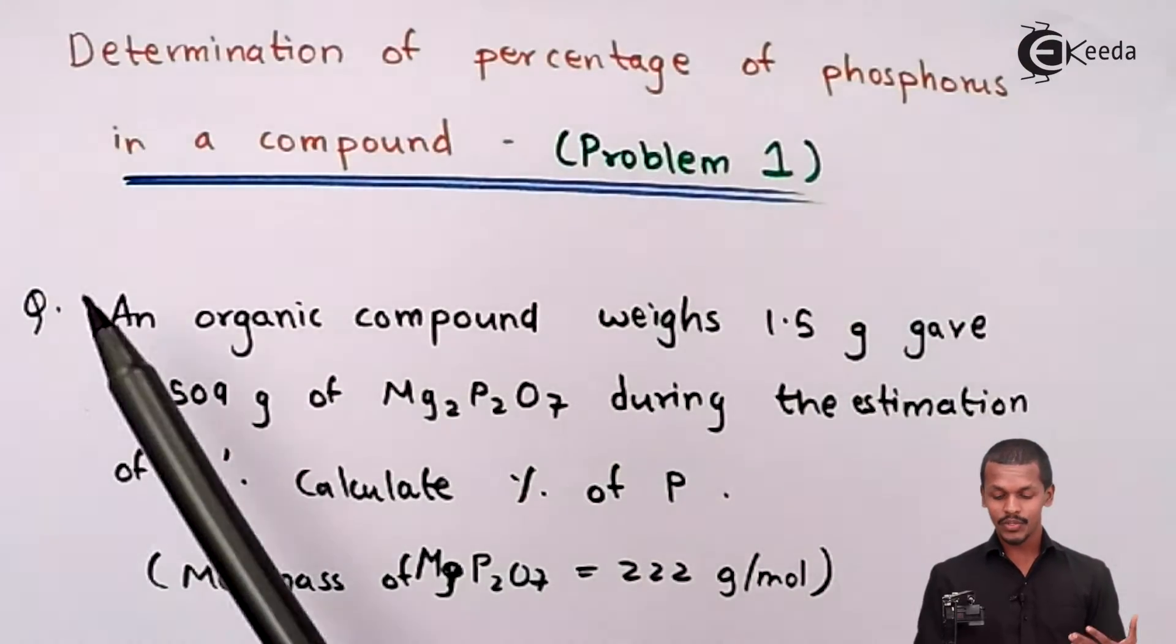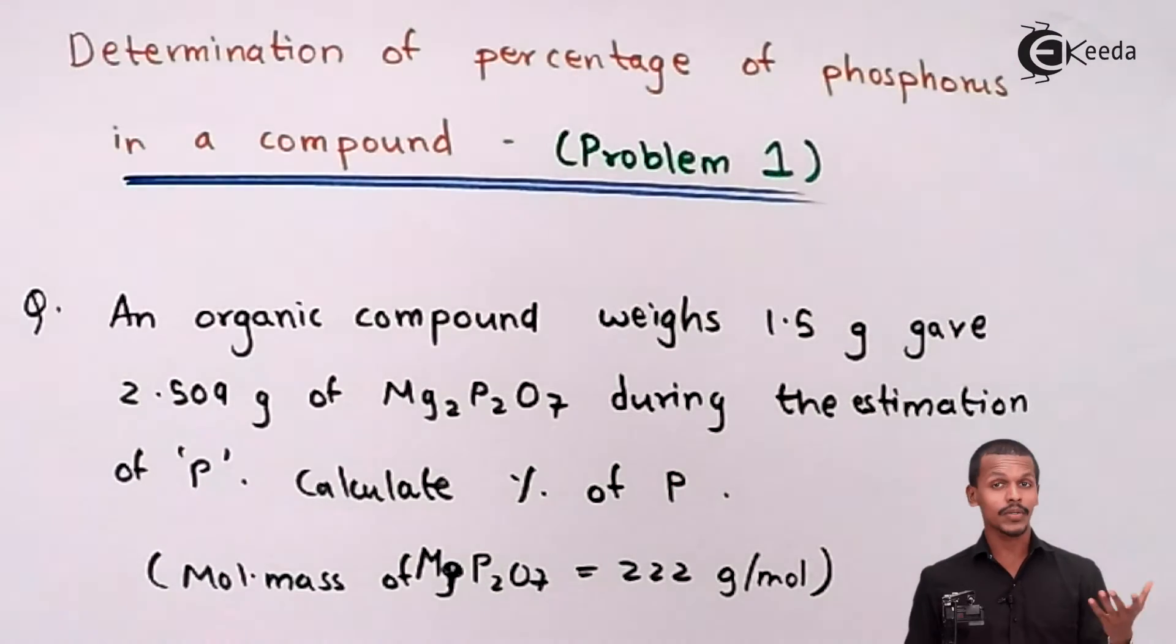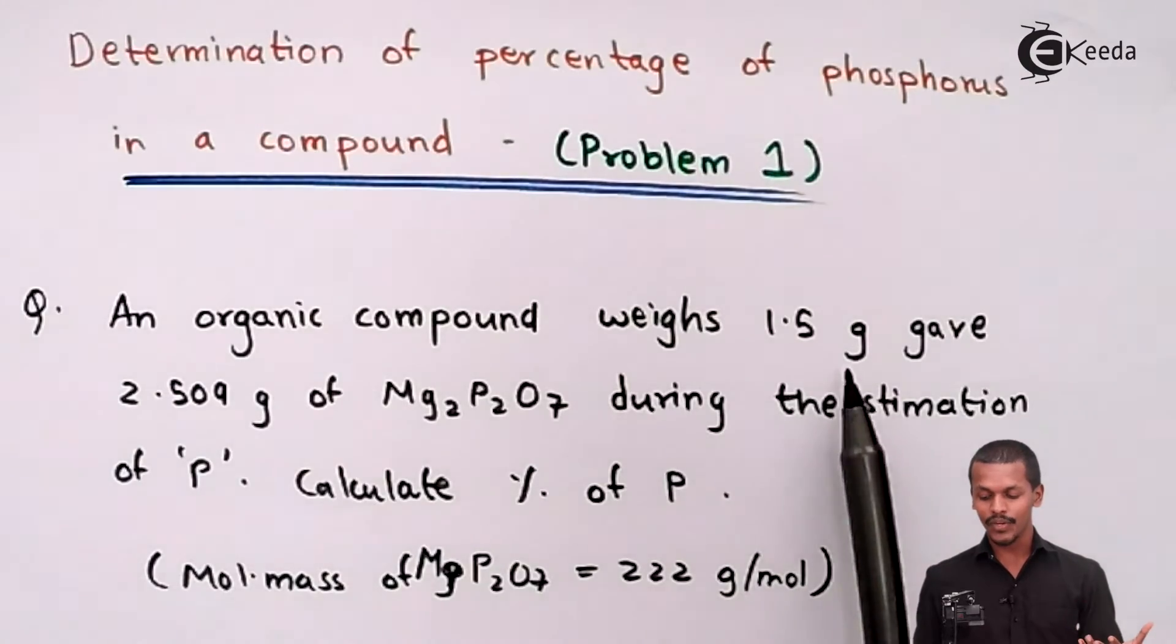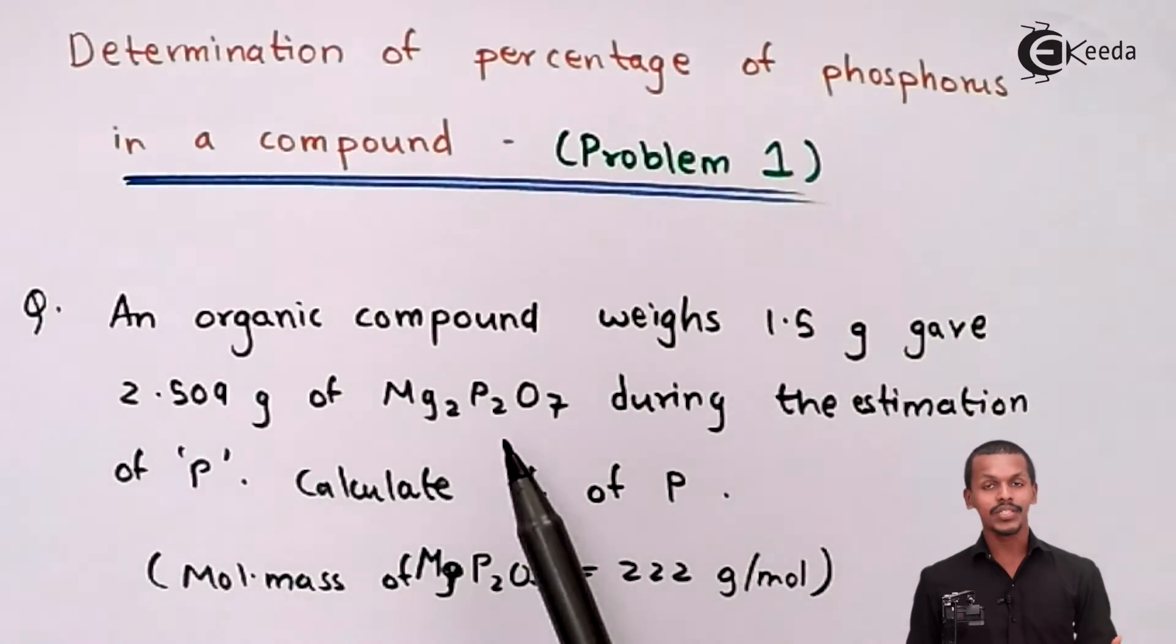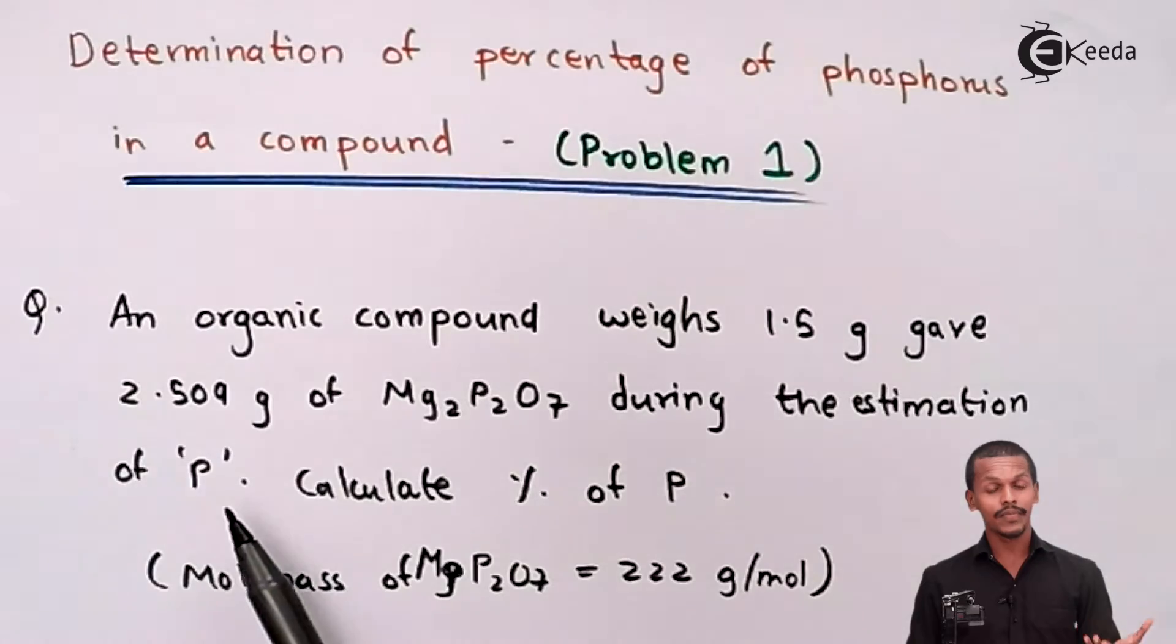We are going to do a numerical to determine the percentage of phosphorus present in the compound. The question is: An organic compound which weighs 1.5 grams gave 2.509 grams of Mg2P2O7, that is magnesium pyrophosphate, during the estimation of phosphorus.